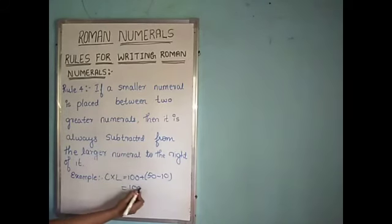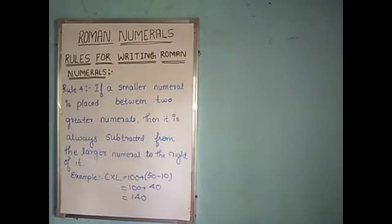So, 100 plus 50 minus 10 is how much? 50 minus 10 is 40. So, the answer is 140. We can write 140 as CXL in Roman numerals.